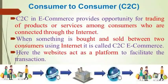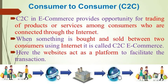The next category is consumer to consumer. Consumer to consumer e-commerce provides an opportunity for trading of products or services among customers who are connected through the internet — when something is bought and sold between two customers using the internet. Here, websites act as a platform to facilitate the transaction. For example, a consumer who wants to sell his property can post an advertisement on the website. Another person interested in buying a property can browse the advertisement, and thus two consumers can get in touch with each other for sale or purchase of property through the website.